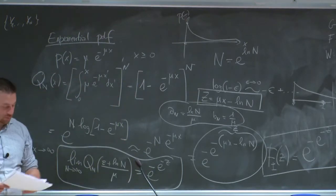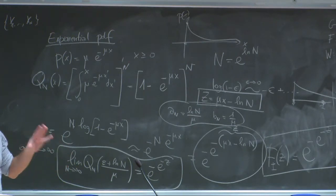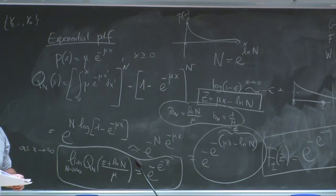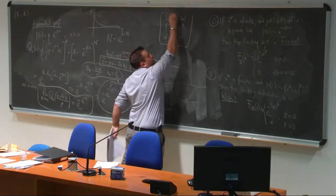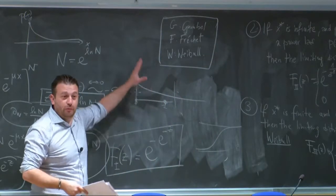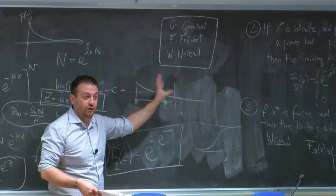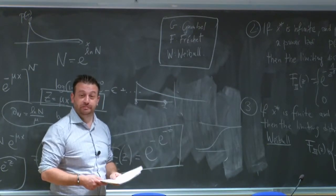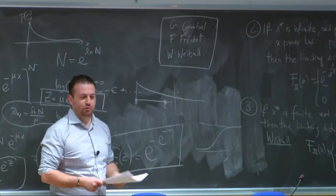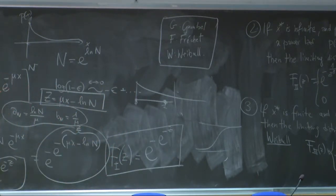The power of this theorem is that this type of limit — the right-hand side — is universal for a very large class of distributions. If instead of an exponential we picked a Gaussian or a stretched exponential, we would still get this universal Gumbel function on the right-hand side, provided we pick a_n and b_n appropriately. The constants a_n and b_n are non-universal, but the limiting distribution is universal — one of three types.